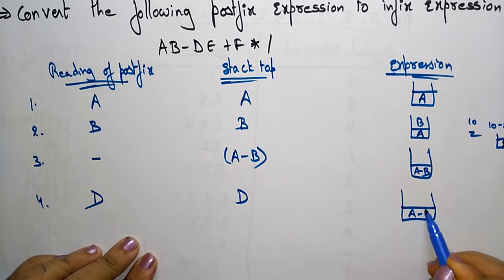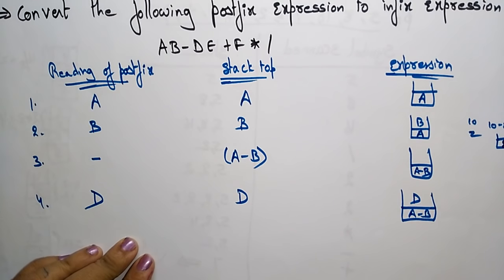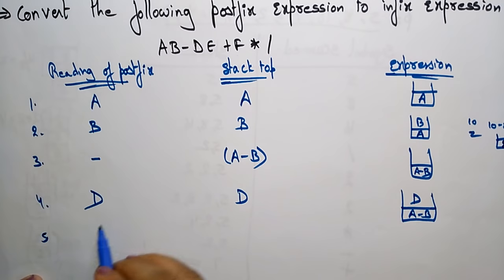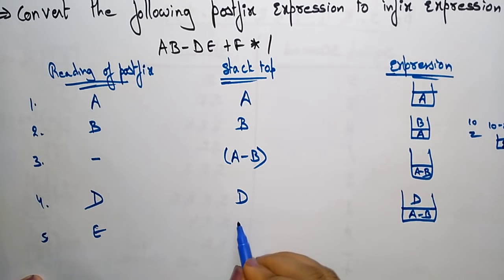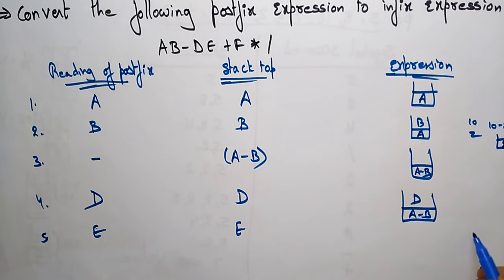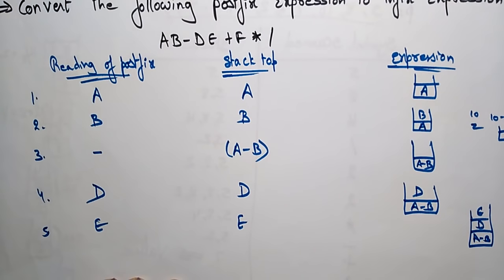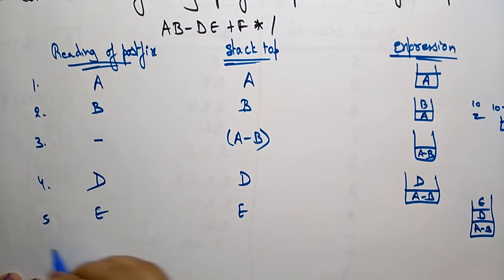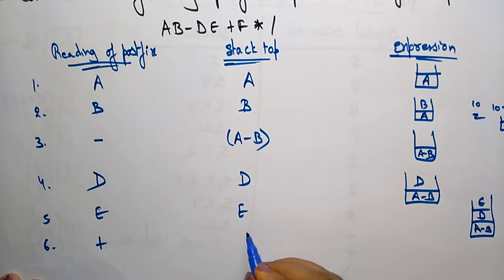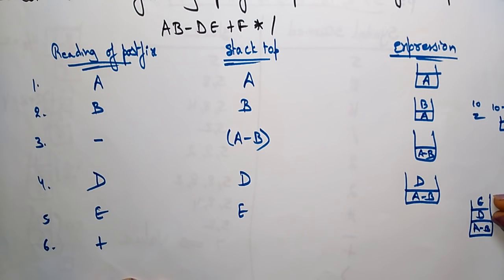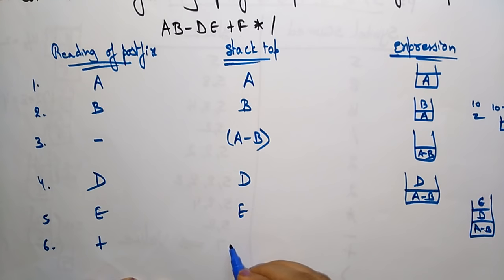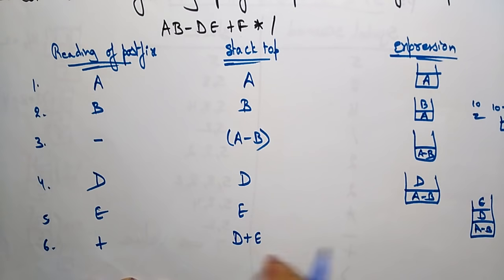Now A minus B is in the stack and the top element is D. Next we read E and place E on the stack top. The stack now contains A minus B, D, and E. Next is the plus operator, so we pop the top two elements D and E and form D plus E, placing it on the stack top.